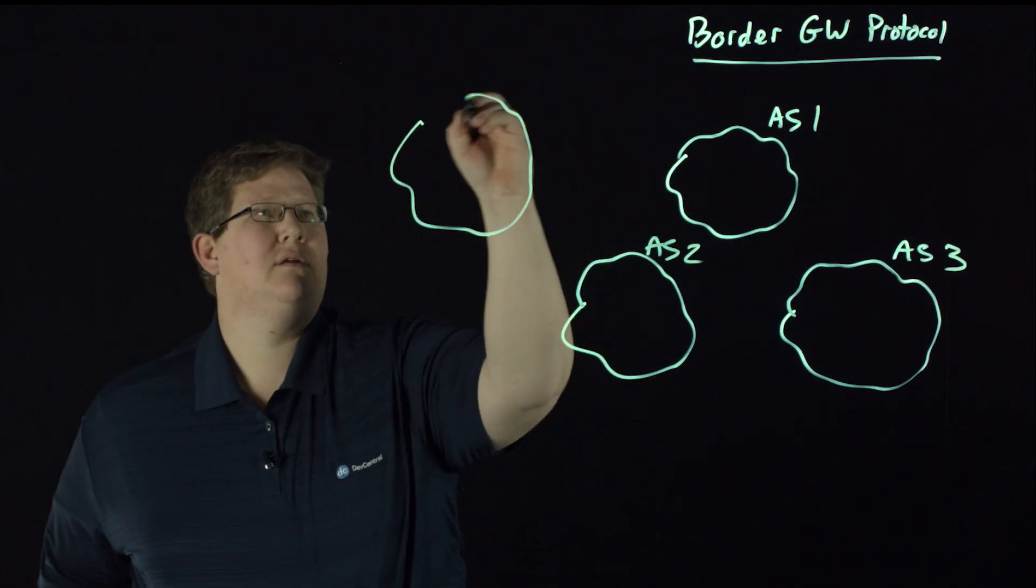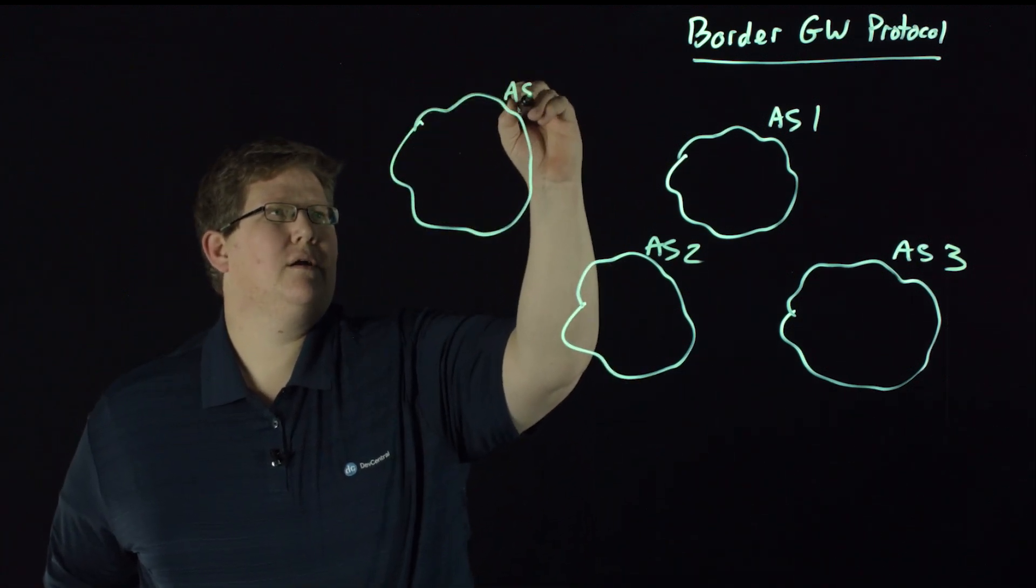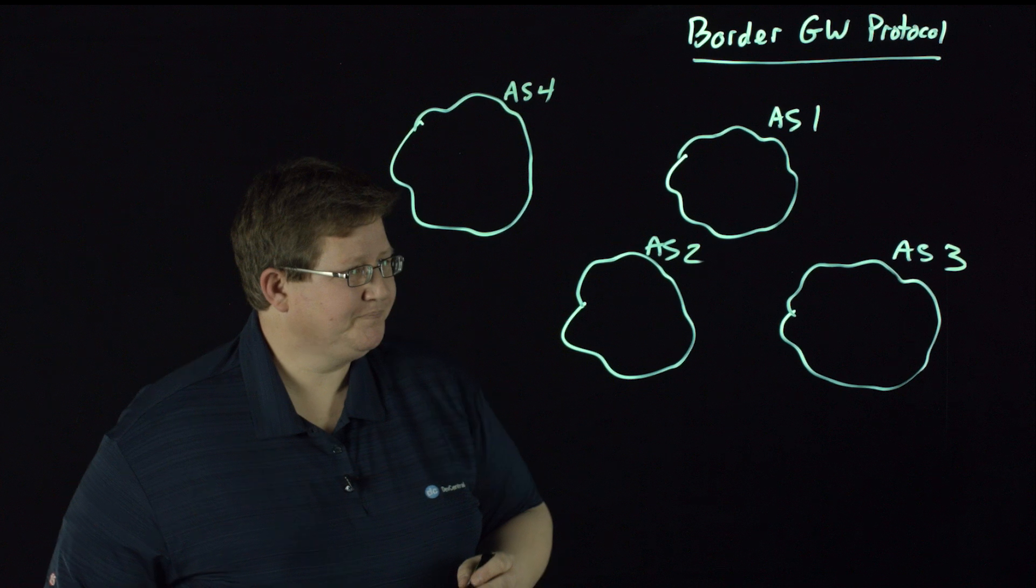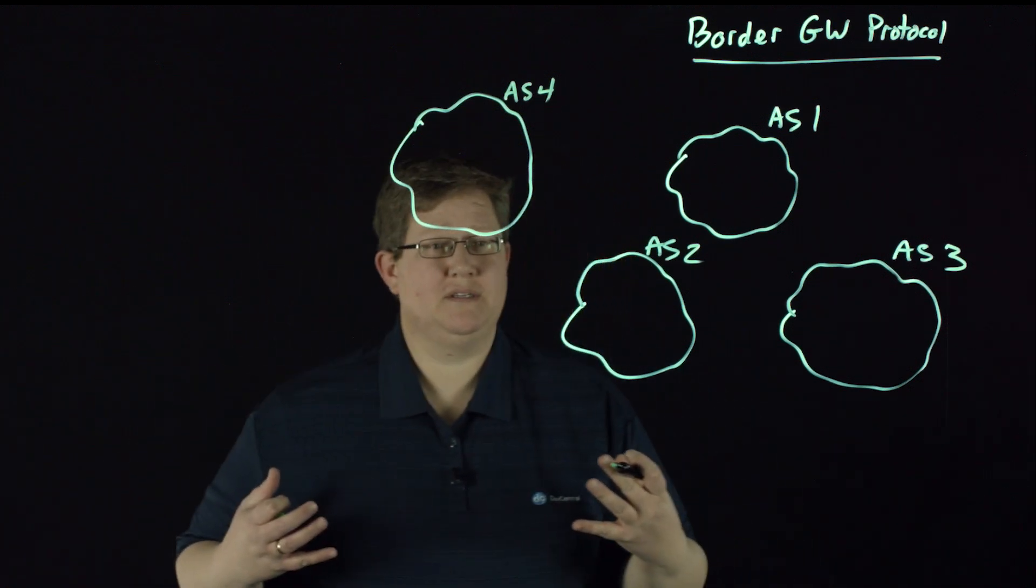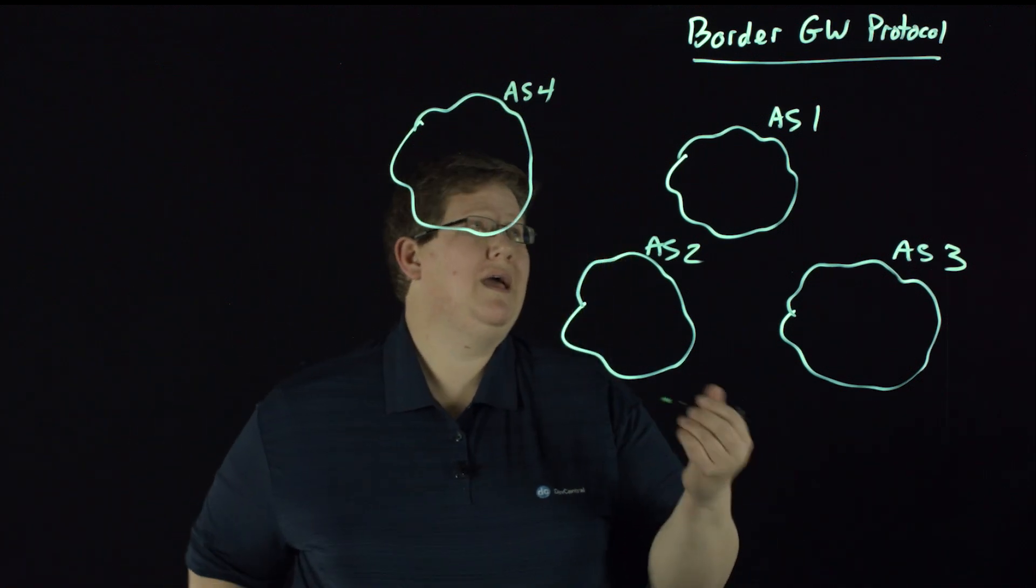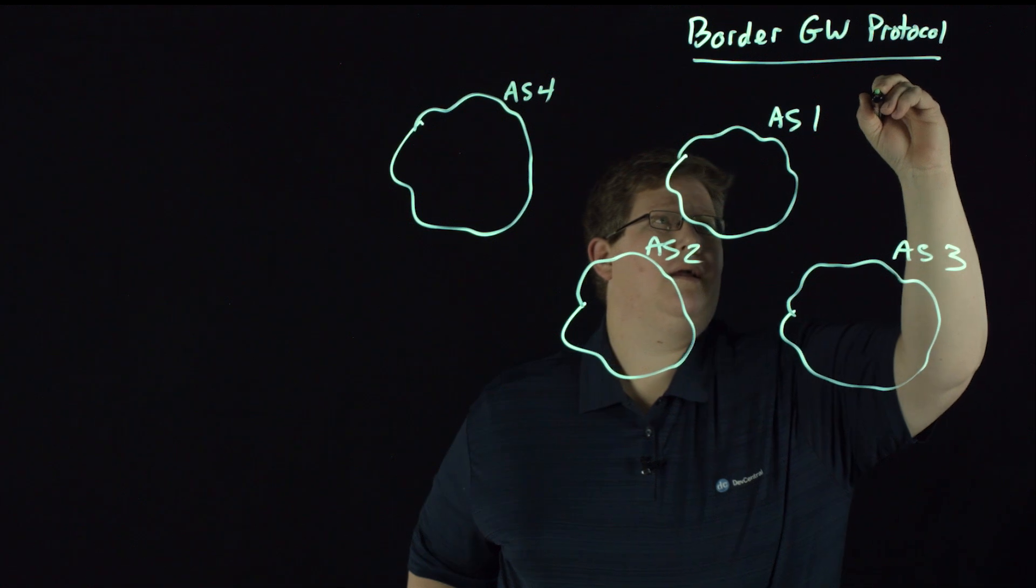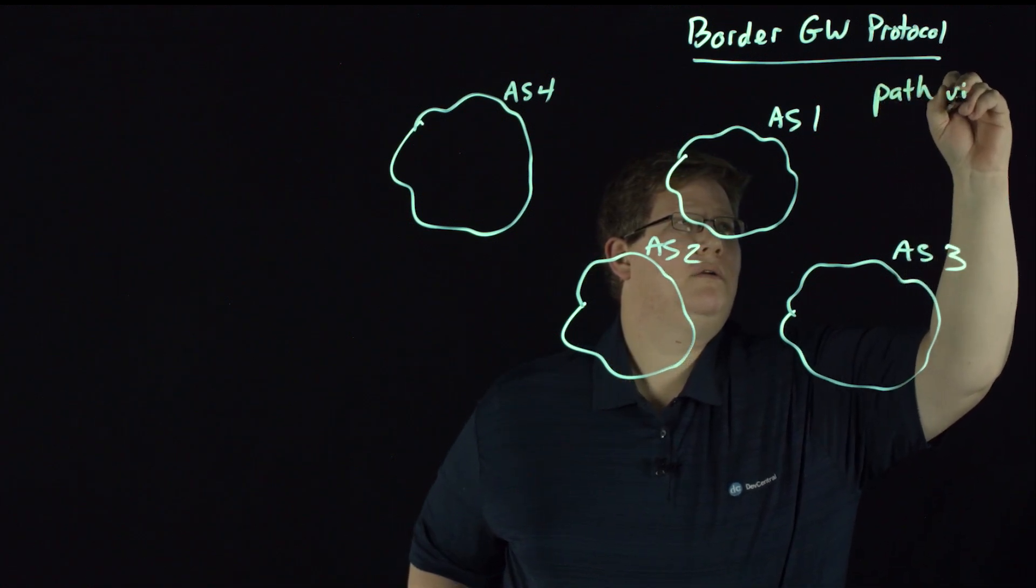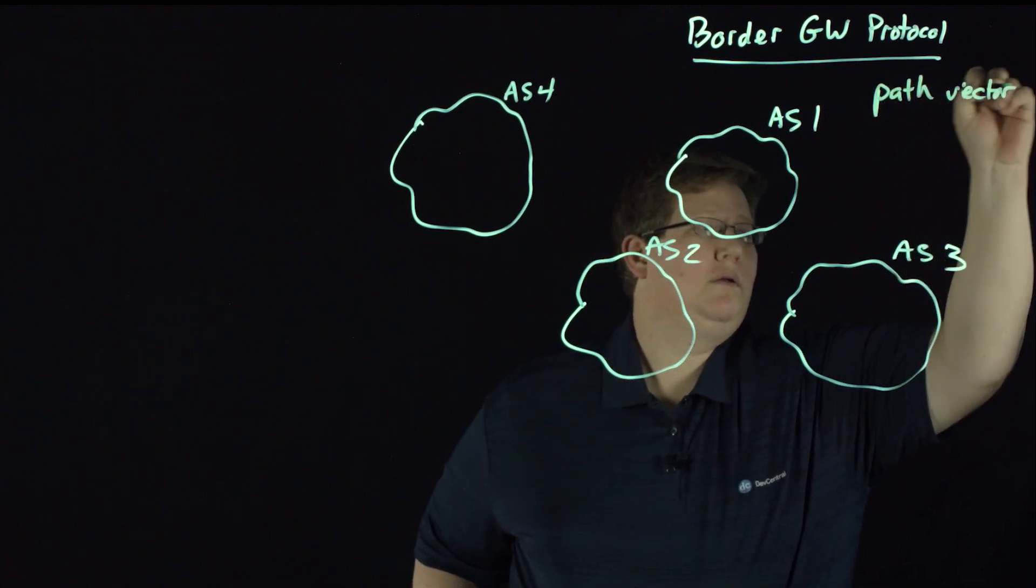And let's put a fourth one out here. So BGP is the protocol. It's the routing protocol, and it is actually a path vector protocol.